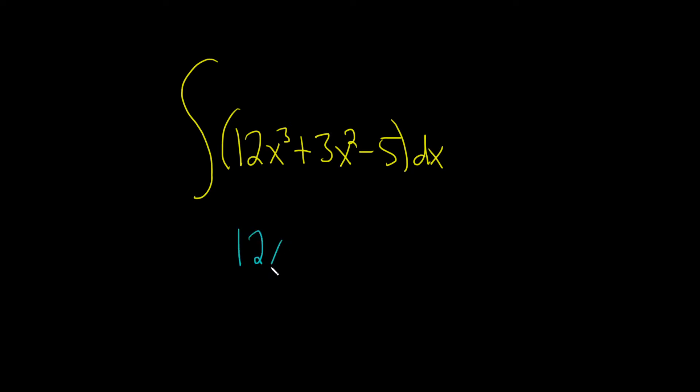So like this, this is 12x to the, so take the three and add one. So three plus one is four. Then you divide by that number.